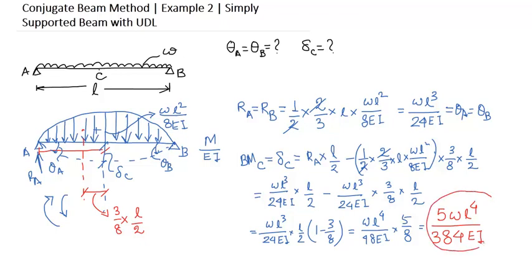It is the deflection value downward at the midpoint. This value of 5WL to the power 4 by 384EI is the maximum deflection of a simply supported beam subjected to a UDL loading at the midpoint. You just remember this value. So we have done with the determination of slope and deflection of this beam.